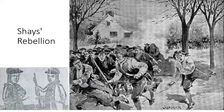Washington said something like: if this can happen in Massachusetts, it can happen anywhere. A rebellion can begin and rage while the government in Philadelphia just sits and watches, powerless to intervene. This convinced these people that some kind of change was necessary.